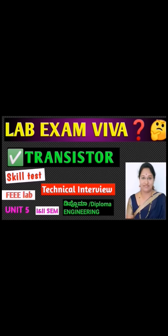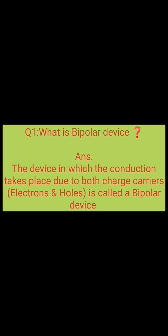Important Viva questions asked on transistor. The first one: what is a bipolar device? The device in which the conduction takes place due to both charge carriers, that is electrons and holes, is called a bipolar device.